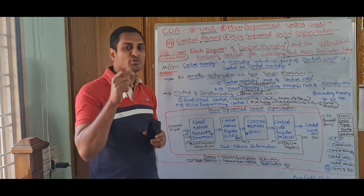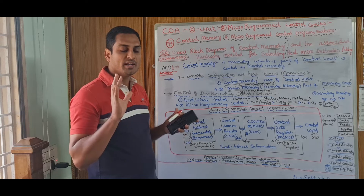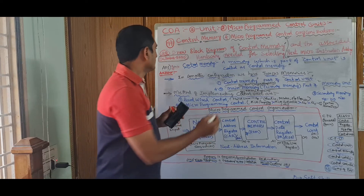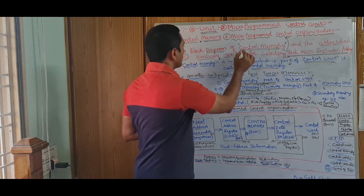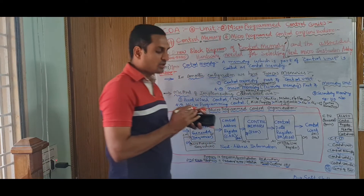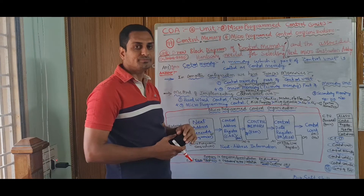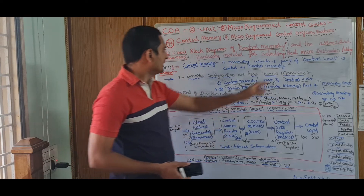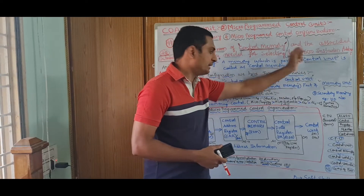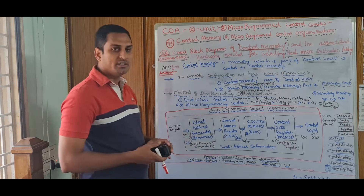Don't get confused. While seeing the question, think for a while and read it once or twice so you will understand. 'Draw block diagram of control memory' — catch this word. Control memory is part of second unit, second chapter. And 'next micro-instruction address' is one more key point for the diagram. Now going to the subject.